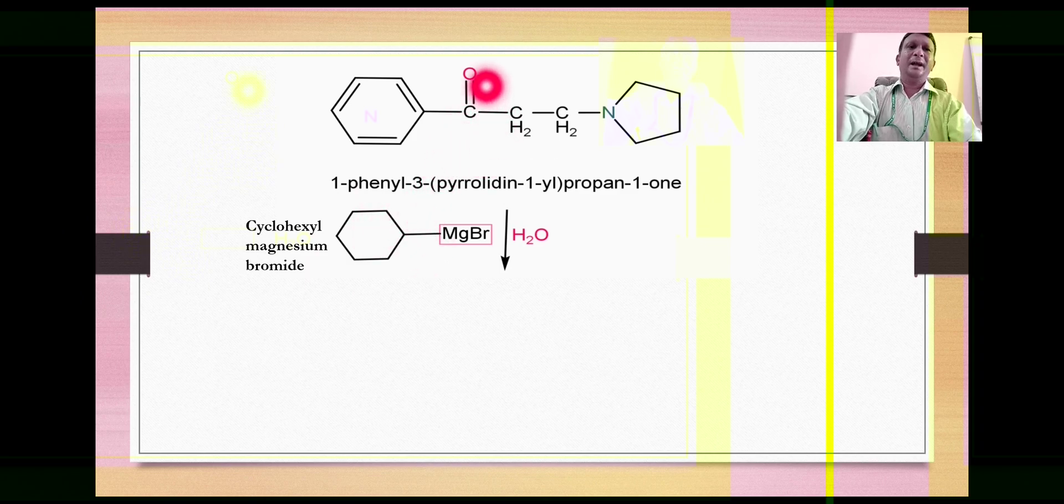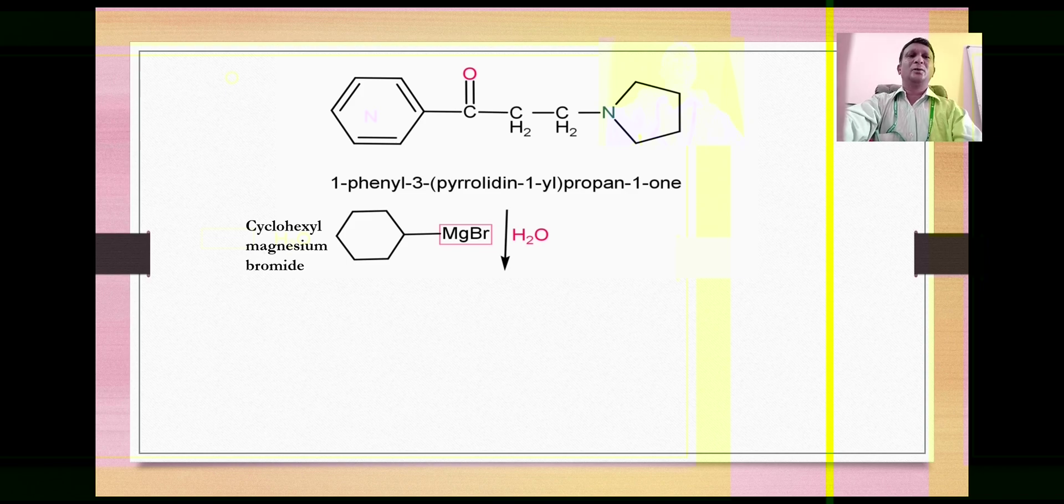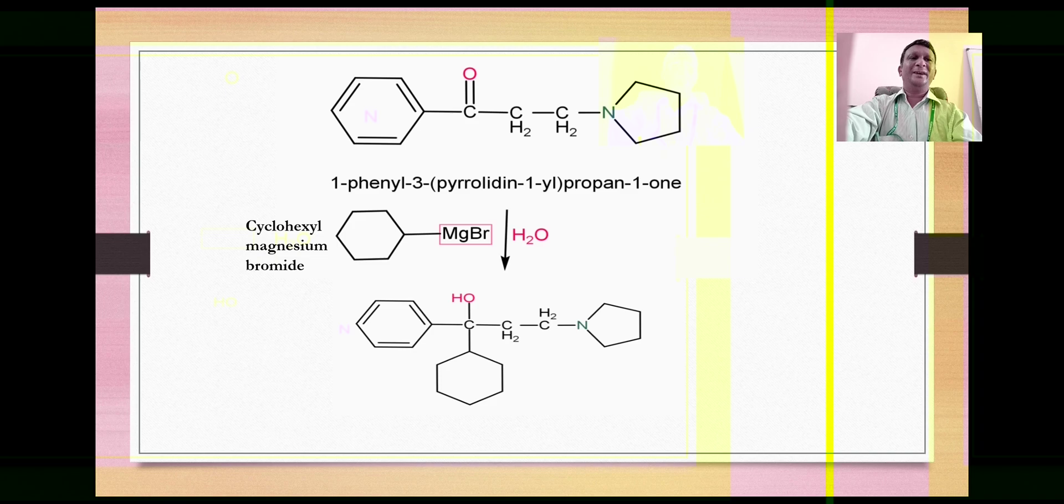This is a very familiar reaction whereby a ketone gets converted into a tertiary alcohol. So the product obtained in this case is this one which is our target molecule procyclidine.